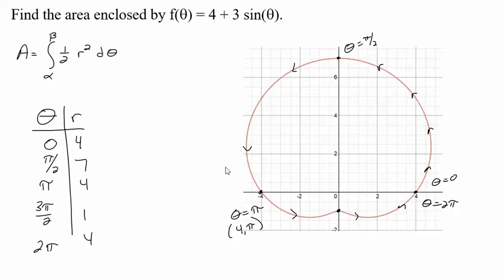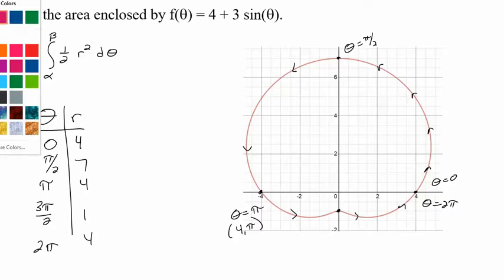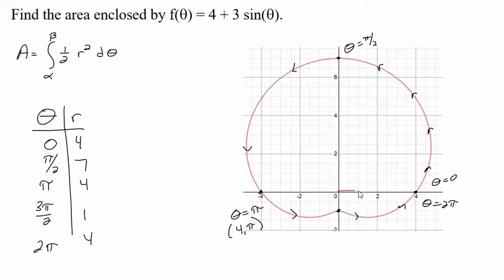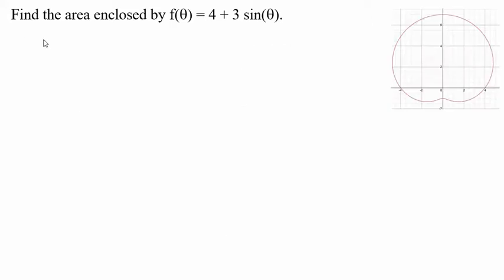So what we're doing then when we do this area is we're adding up the area of these slices from theta equals 0 to 2 pi, these infinite slices. And so by the time we get down here and we're getting to thetas, you know, where we're getting close to adding up all of the 2 pi all the way around.